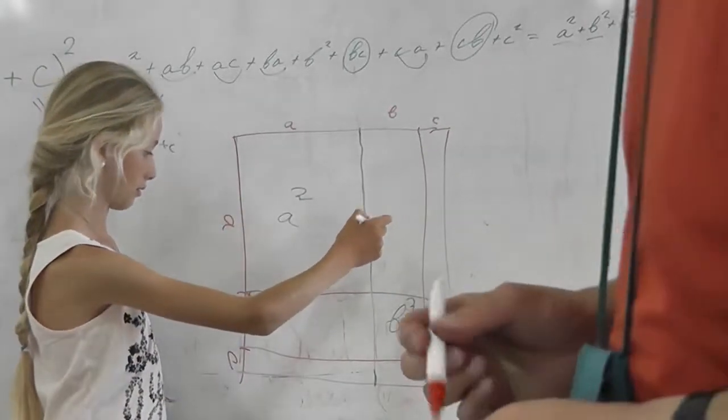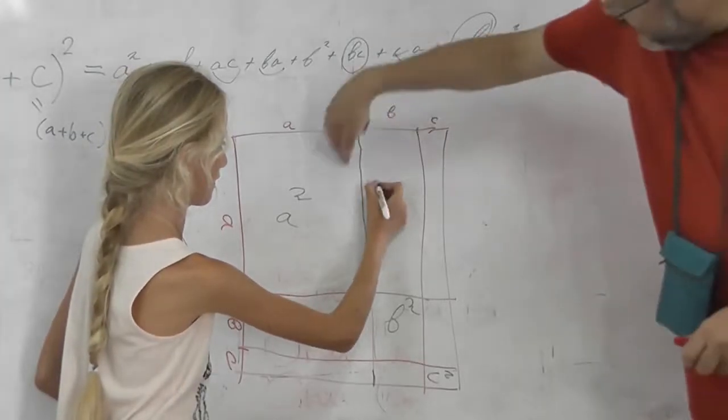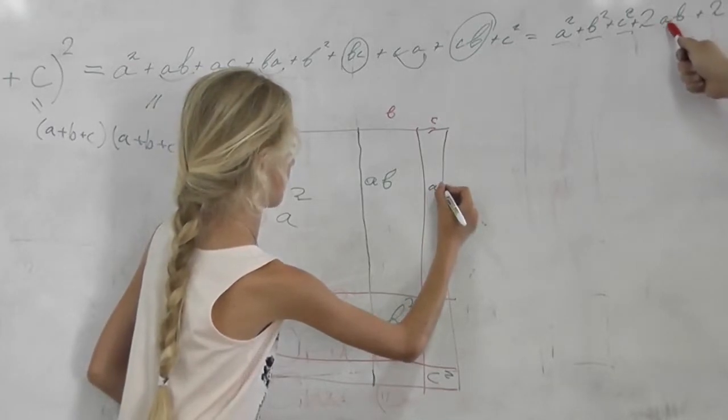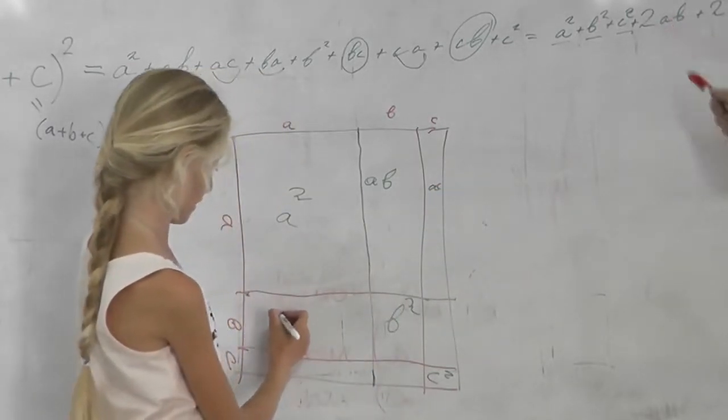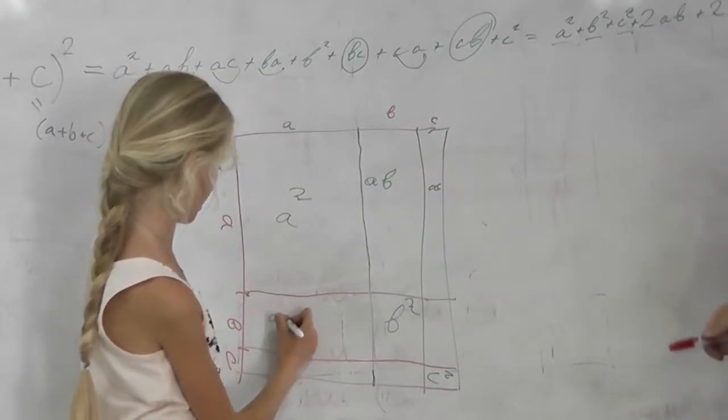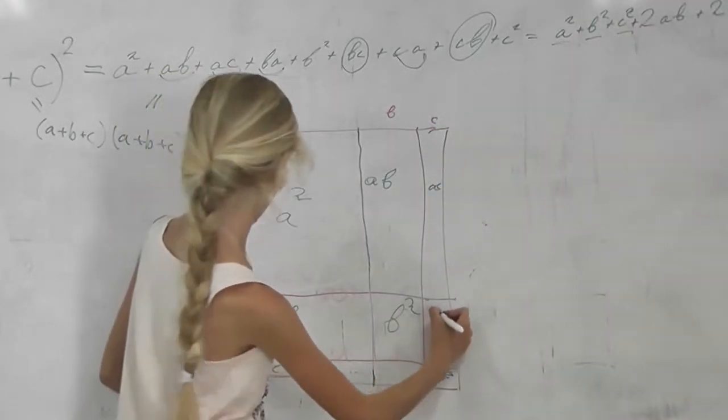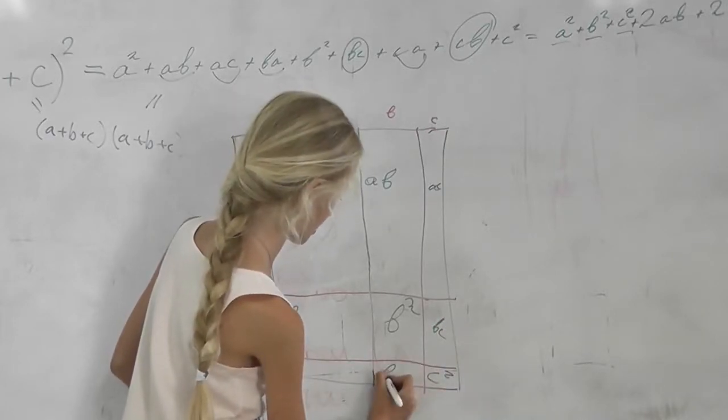This is ab. And we have two ab. Where is the second ab? Here. So they are symmetric. This and this one. This is ac. And here is bc. And here is bc.